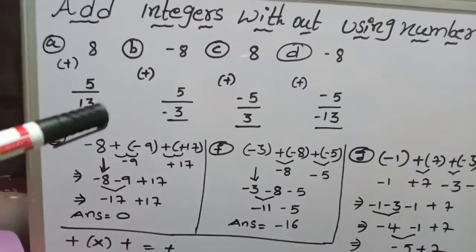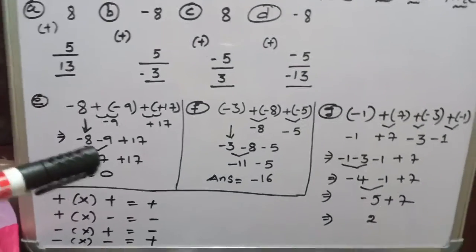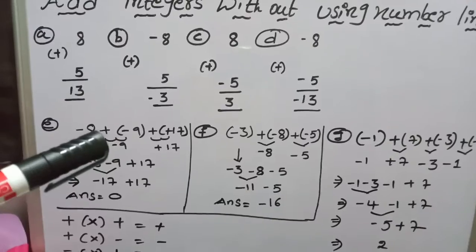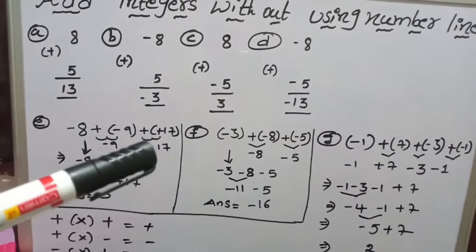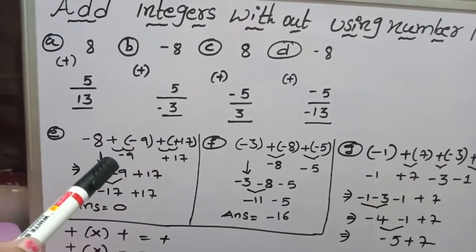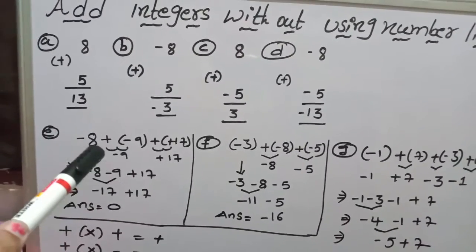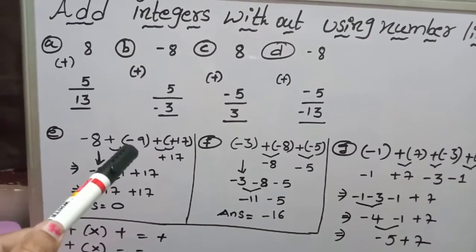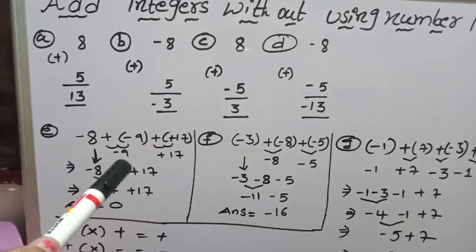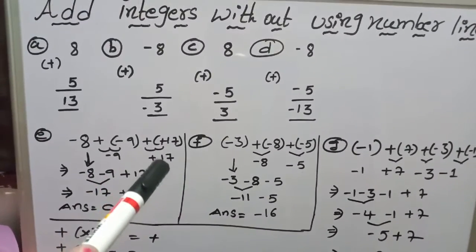So friends, so far I have done examples with only 2 numbers. Now I will do examples with more than 2 numbers. Coming to example E: minus 8 plus of minus 9 plus of plus 17. Here consider 2 signs together — plus into minus means minus 9, and plus into plus means plus 17.